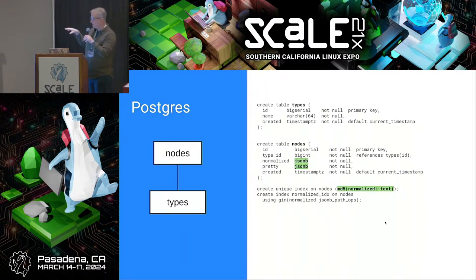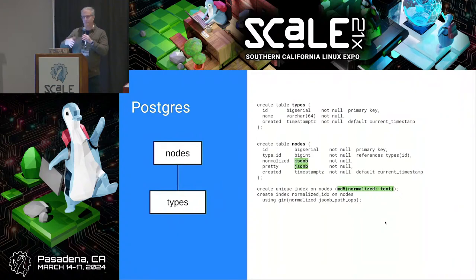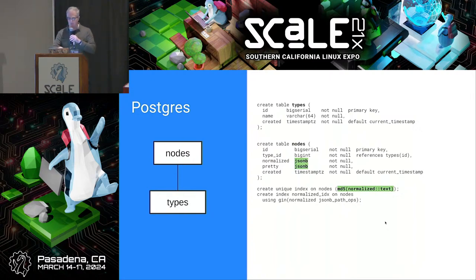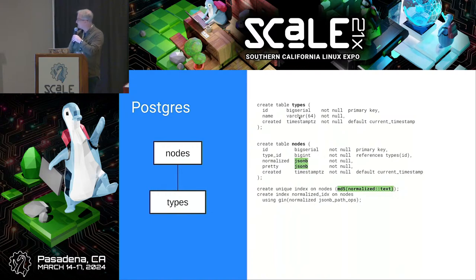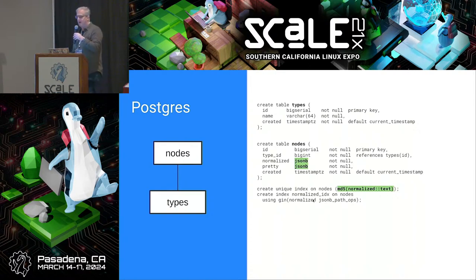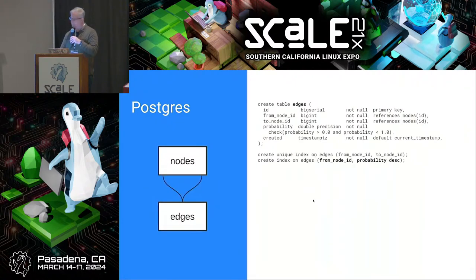Now's a good time to point out that all the SQL, DDL and DML you're going to see today, it is functional, but it is not precisely what was in the system we built, primarily because I haven't had access to that Git repo in years. Functionally it works — I've actually got it running on my laptop. If we have time at the end, I'll play on the screen. Types: pretty simple, an ID and a name. The nodes have the type referencing back to the type. We store a normalized version and a pretty version. And we've got a unique index on the text of the normalized version and also a GIN index on the normalized so we can find things.